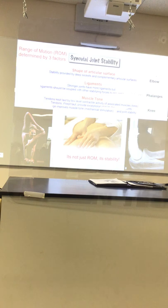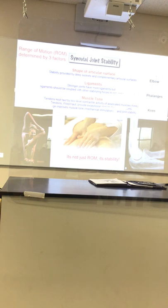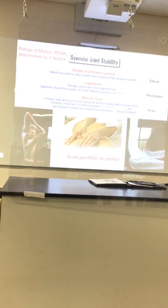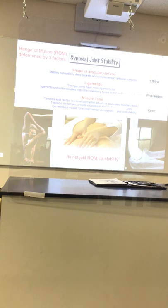Range of motion and joint stability are inversely proportional — as one goes up, the other goes down. The more stable your joints are, the less range of motion you have; the more range of motion, the less stable. Three things determine this: the shape of the articulating surface, the ligaments involved and their tightness, and muscle tone.